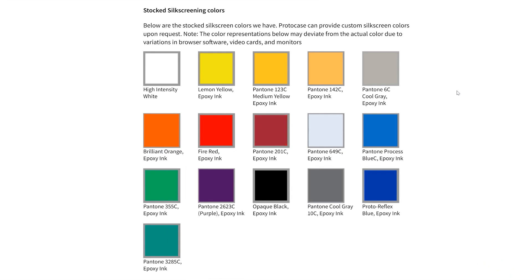Tip number six: choose the correct color mode. If you're choosing digital print for your graphics, your artwork needs to be in CMYK color mode in order to ensure the colors are most accurate. If you're going the route of silkscreen, you do not need to provide a certain color mode. Our silkscreen is offered in specific stocked colors, so you'll just pick the colors you want.